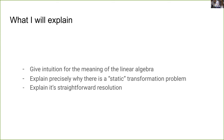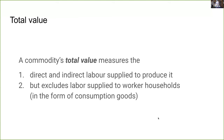In this short talk I'll explain the intuition and the linear algebra behind the transformation problem, explain precisely why there is a static transformation problem in Marx's theory, and explain how it can be straightforwardly resolved. Let's start with the definition: a commodity's total value is the direct and indirect labor supplied to produce it, but excluding the labor supplied to worker households in the form of their consumption goods or real wage.